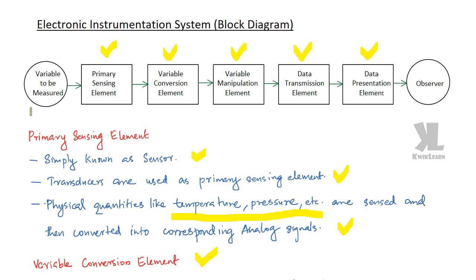So we will be having a variable, and the variable will be measured by an observer. In between the variable and the observer, we will be having an electronic system that is actually the electronic instrumentation system.